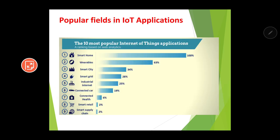IoT is nowadays used in almost all walks of life, but the most popular application is in smart homes. The second most popular is wearables, as various smartwatches are coming up in the market. Smart cities have a market strength of 34 percent, and so on.